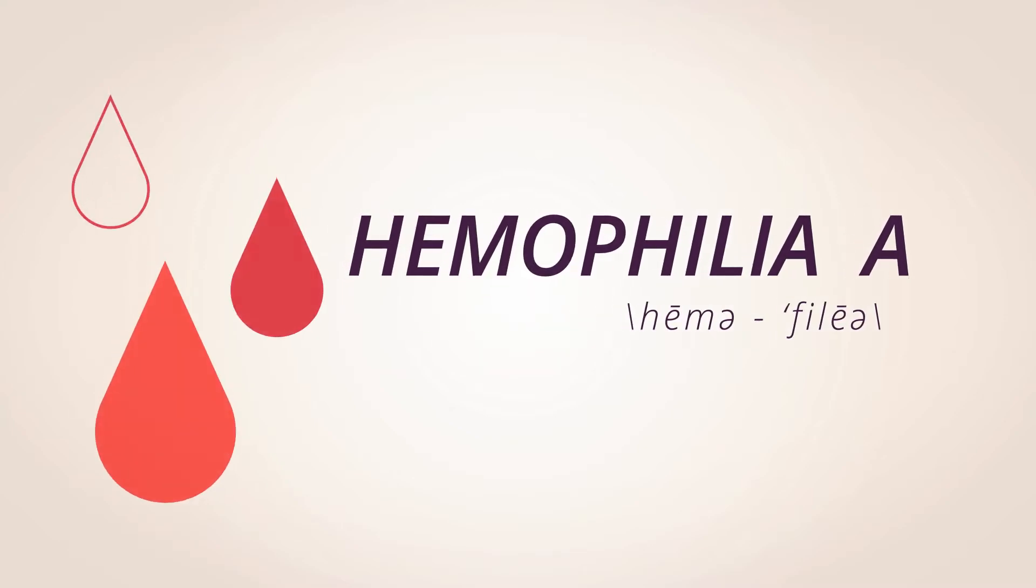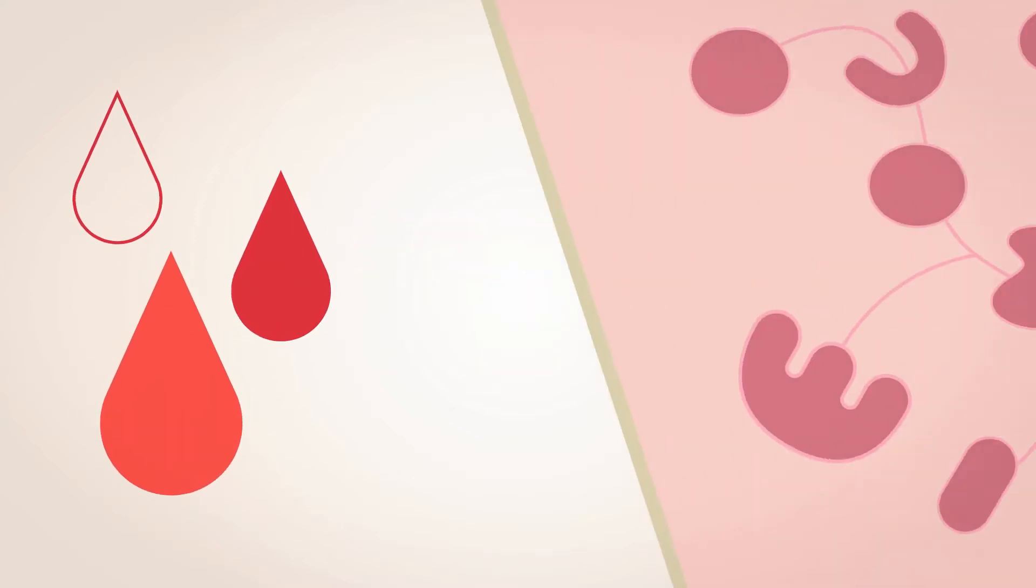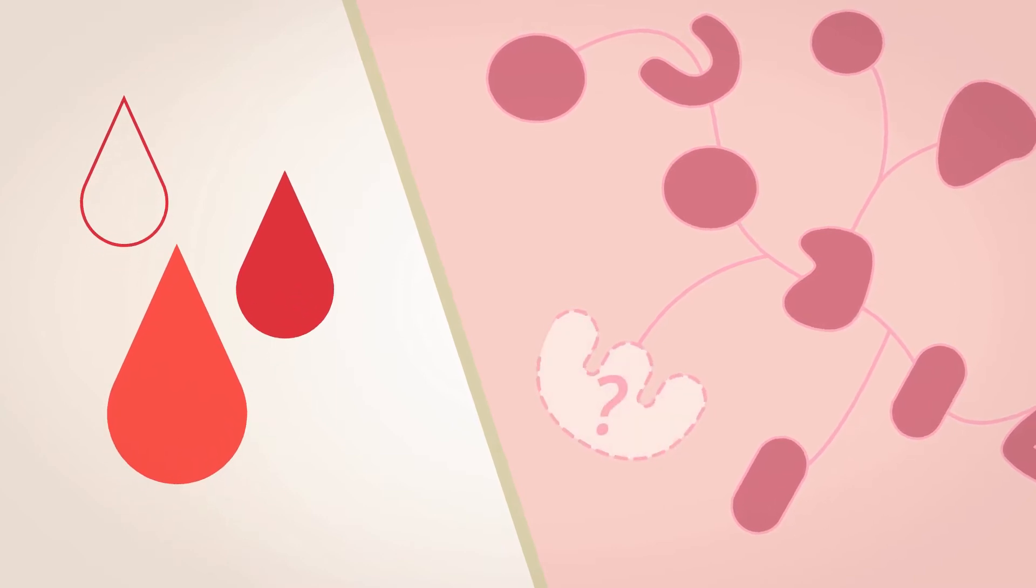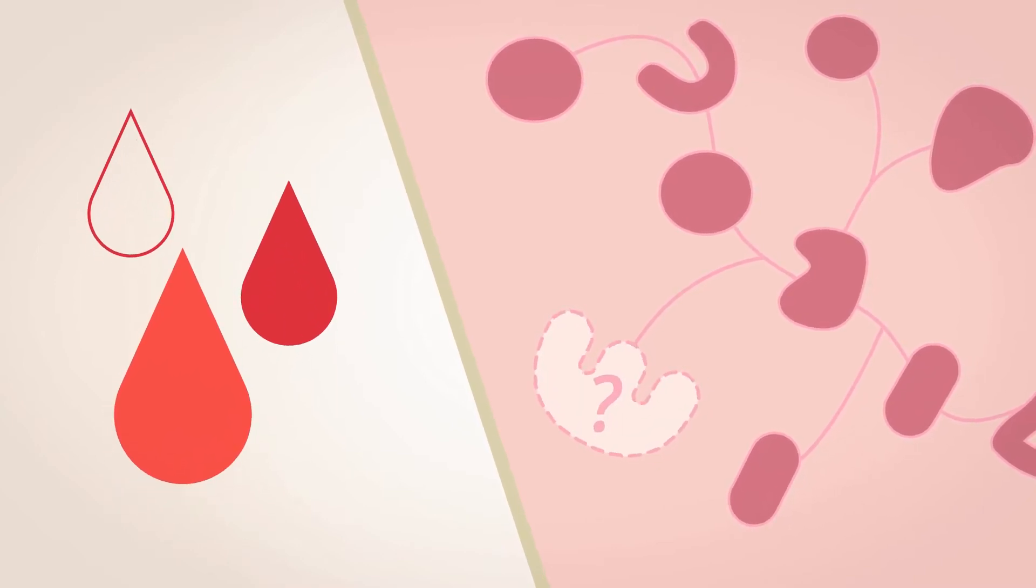Hemophilia A is a rare bleeding disorder that occurs when a specific protein in the body is missing or doesn't work as it should, and the blood can't clot properly.